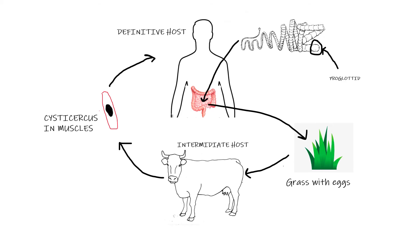Its body consists of proglottids, and each proglottid has eggs. When it's time, proglottids with eggs pass into the environment and eggs attach to grass. And this life cycle repeats over and over again.